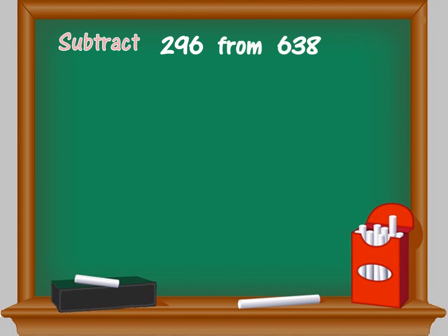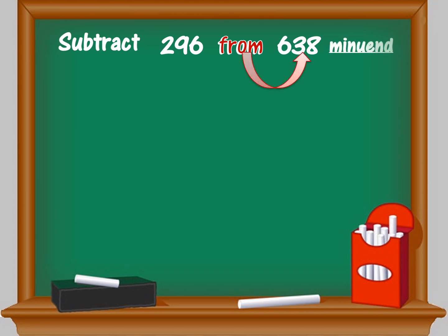Subtract 296 from 638. You know the meaning of subtract, and you also know that you arrange the greater number minus the smaller number. But in this question there is an important term you must understand, and that is the term 'from.' Whenever you see 'from' in subtraction, the number written after 'from' is the minuend.